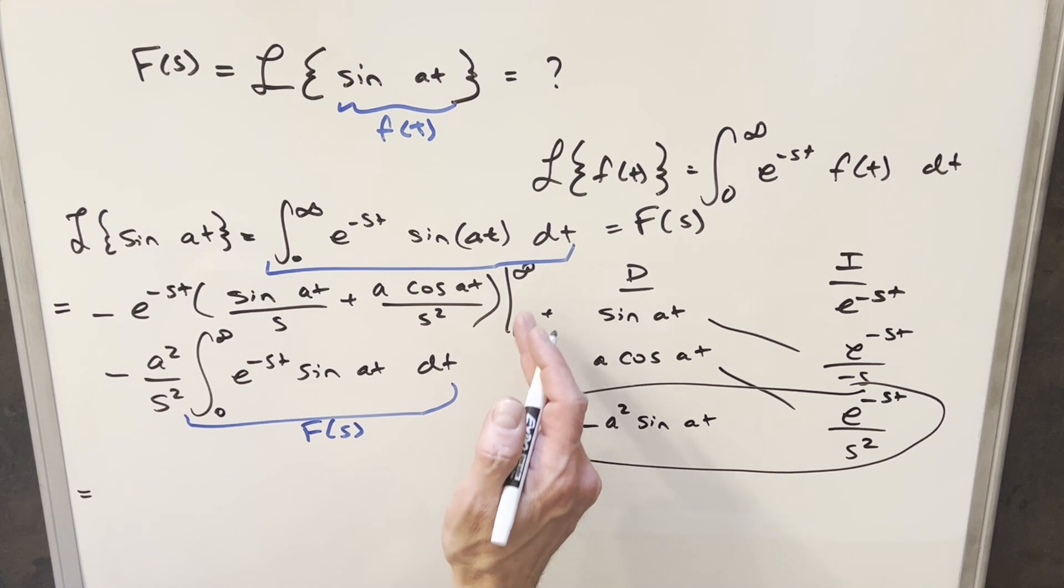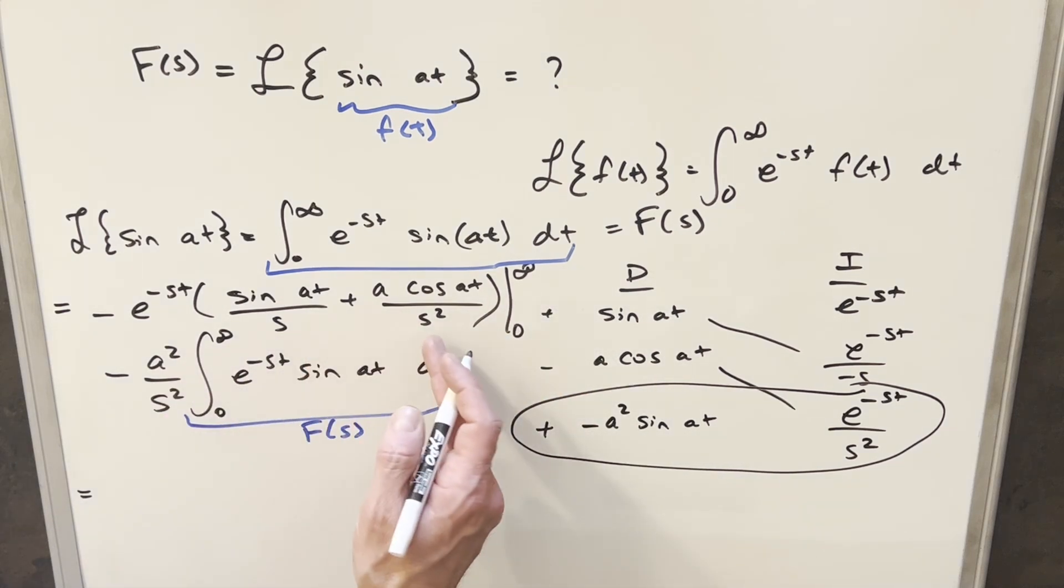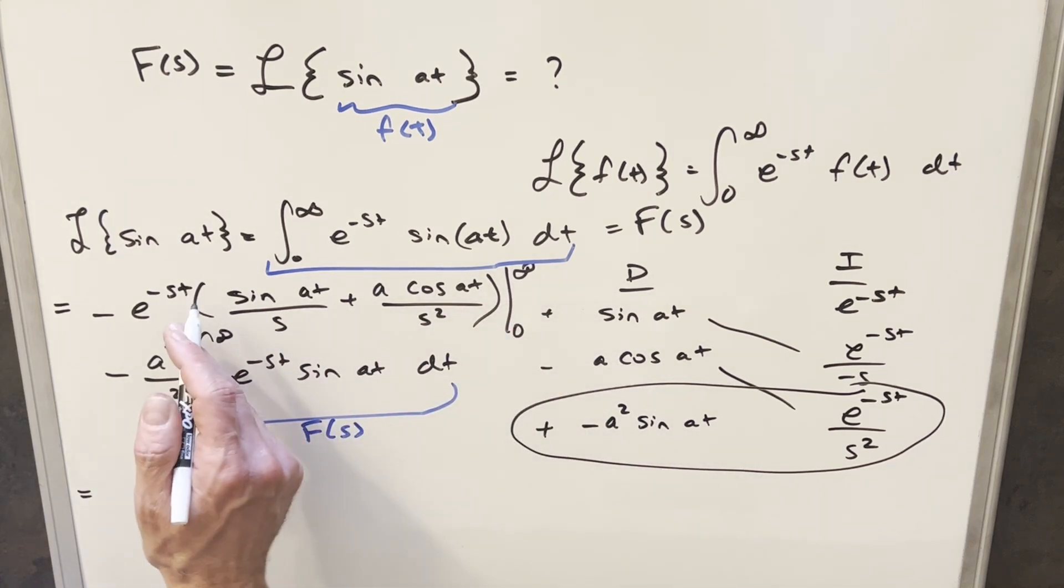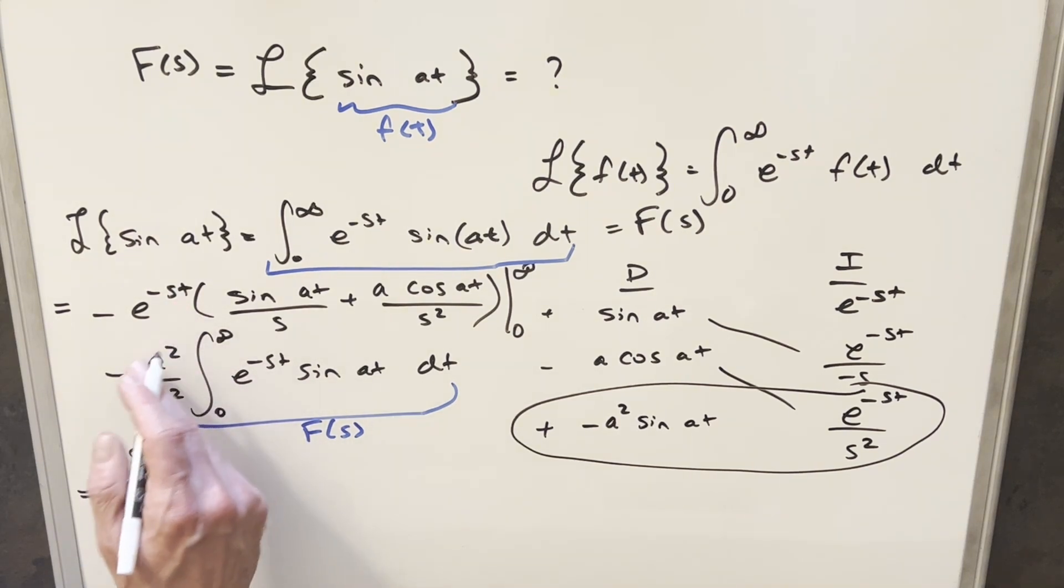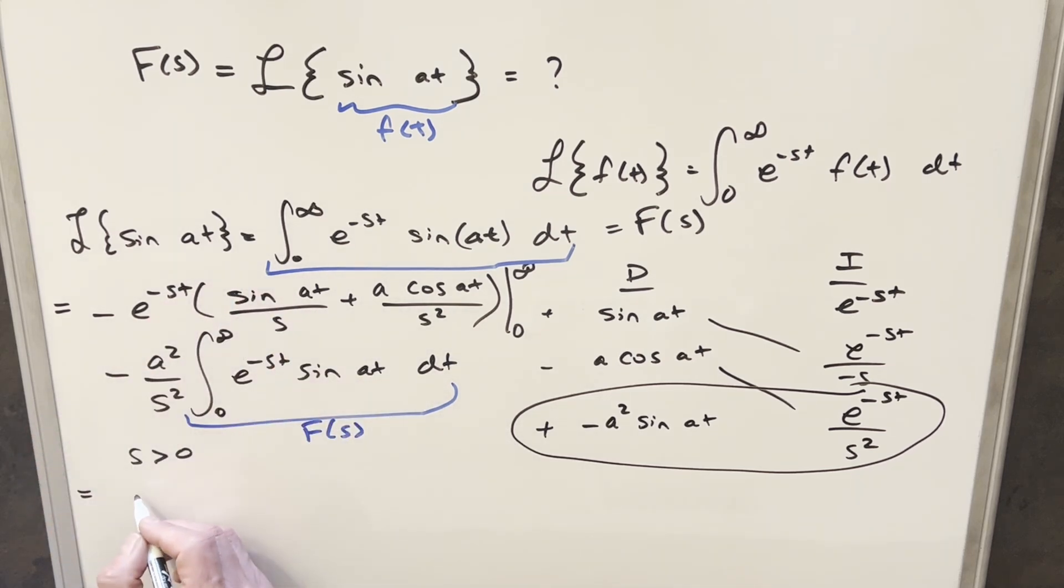So now we can go ahead and try to evaluate this. So first evaluating this first part at infinity, we don't have to worry too much about sine and cosine, because those are varying between minus one and one. It's not going to matter much when we plug in infinity here. But as long as we put this condition here, like we've done in previous videos, that s is greater than zero, with that condition, we end up with like e to the minus infinity, and that's going to zero. So this first piece, the whole thing is just going away to zero.